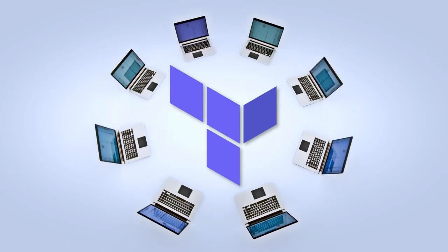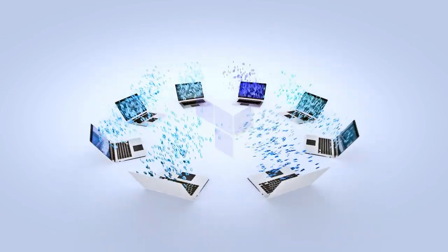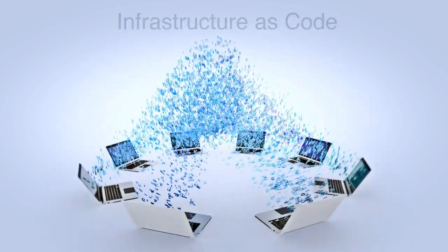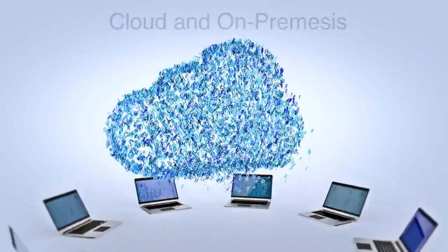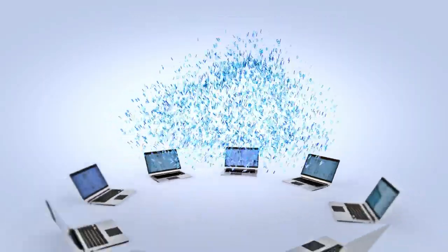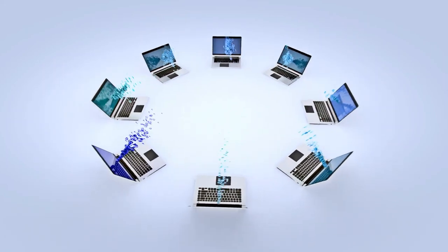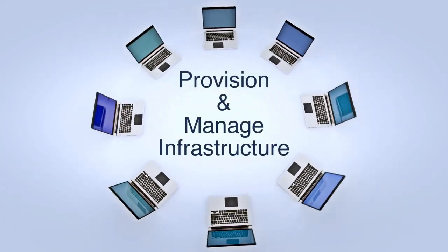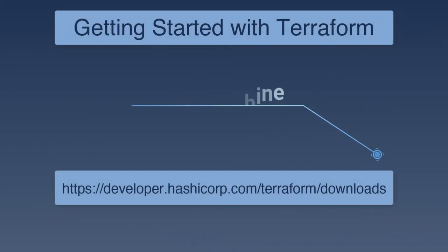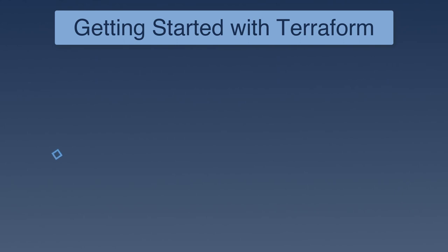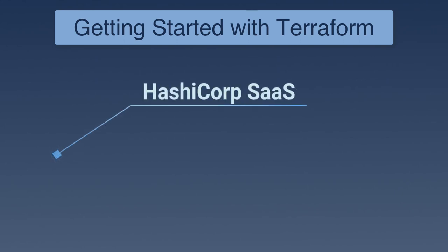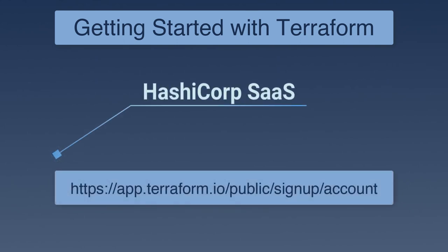Terraform, from HashiCorp — a Cisco partner — is an infrastructure as code tool that lets you define both cloud and on-prem resources in human-readable configuration files that you can version, reuse, and share. You can then use a consistent workflow to provision and manage all of your infrastructure through its lifecycle. To use Terraform on your local machine, simply download it from the website. You can also run Terraform on the HashiCorp software-as-a-service platform, which has a free tier.